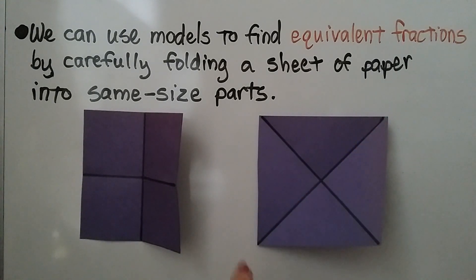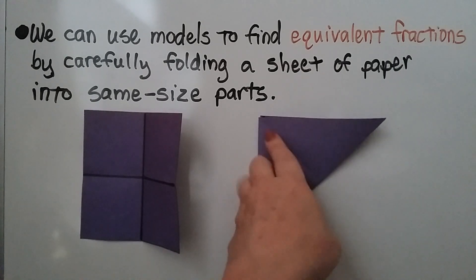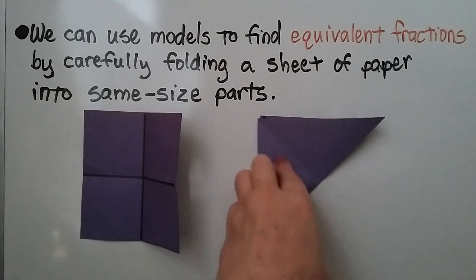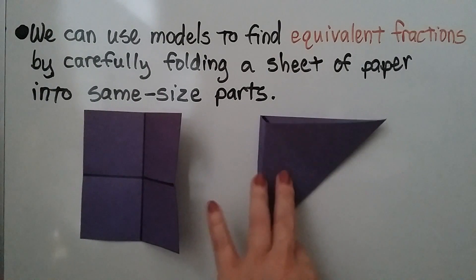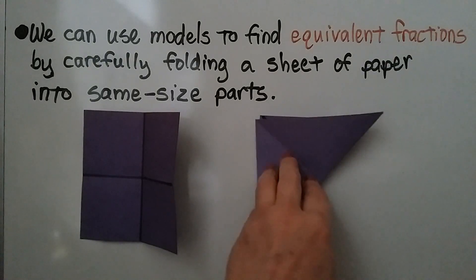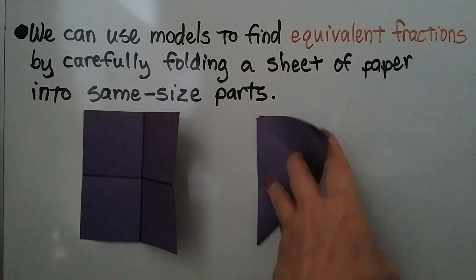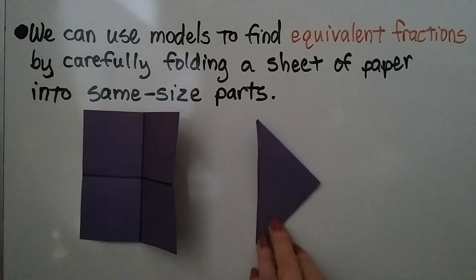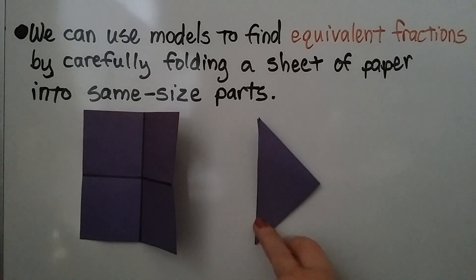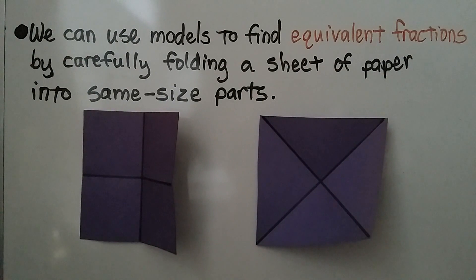We can even do it on a diagonal. We can fold the paper in half on a diagonal and line these corners up very carefully. Then we can fold it in half again — fold it in two-fourths. So we fold it in half very carefully so the corners line up, then fold it in half again. That makes a nice triangle. It's very important to line the corners up. When we open it up, we have four equal parts.